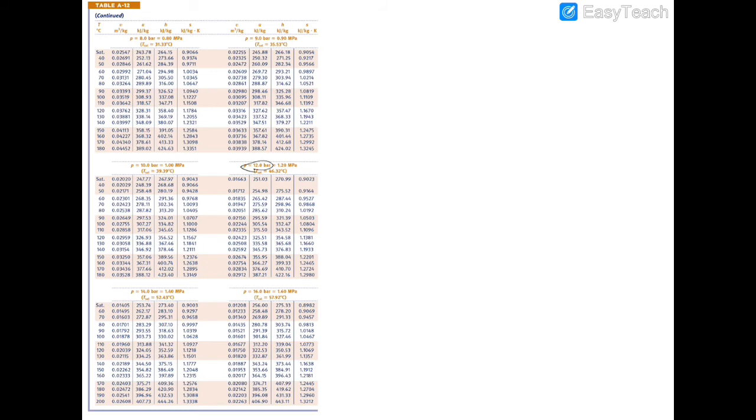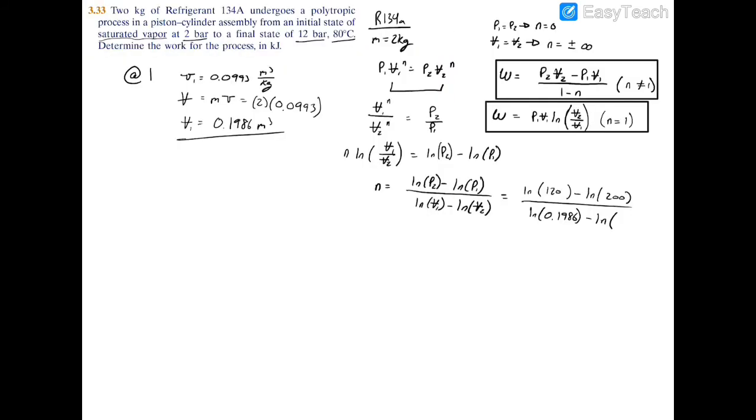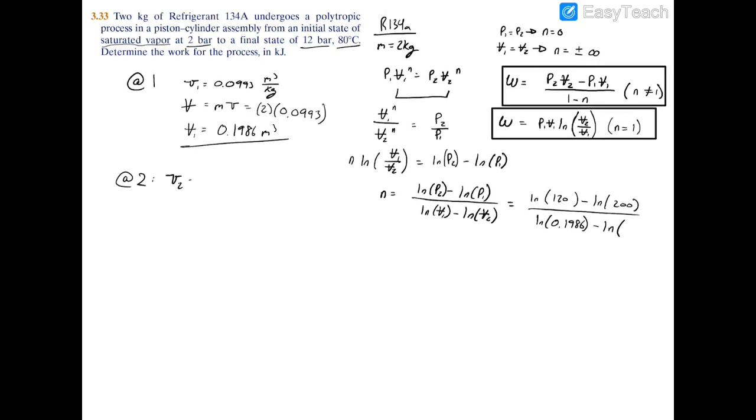At 12 bar and 80 degrees Celsius our specific volume is 0.02051 cubic meters per kilogram. Multiplying by the mass, the bulk volume at 2 equals 0.0412 cubic meters. So now we can plug that into our expression: 0.0412.